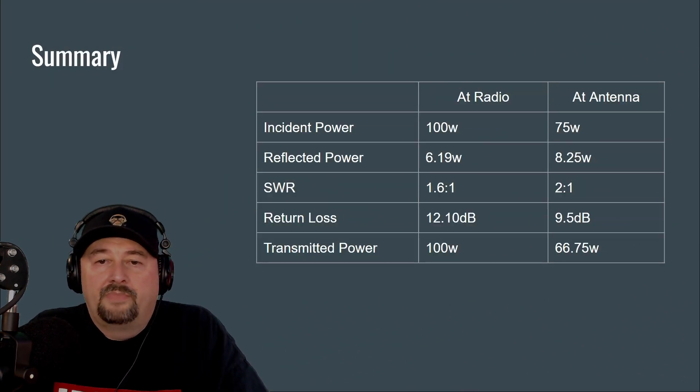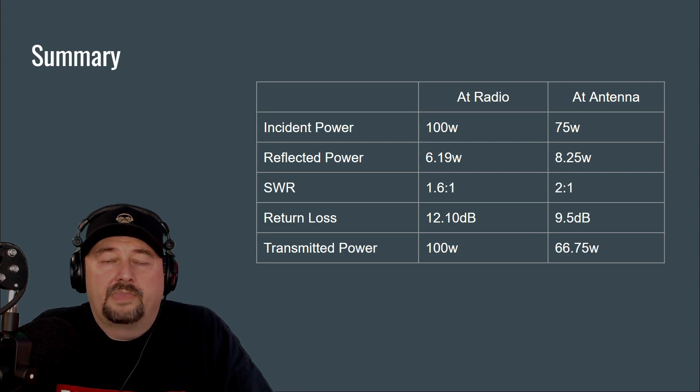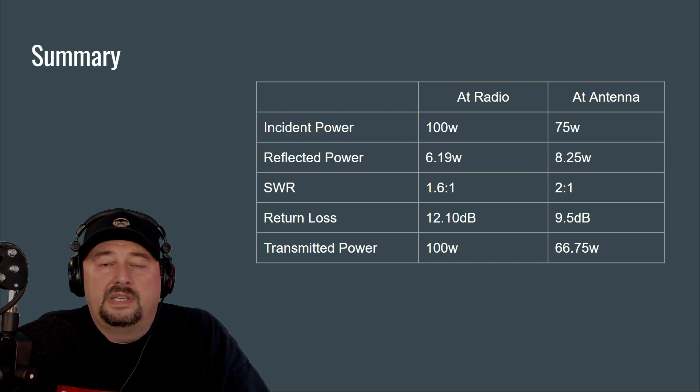All right, so let's go into the summary. Here we have a data table that shows a couple of different measurements at different places. So the first one being incident power, or forward power. At the radio, it's 100 watts. At the antenna, it's really 75. Reflected power at the radio is 6.19 watts. At the antenna, it's really 8.25. SWR readings at the radio are 1.6 to 1, while at the antenna, it's 2 to 1. Return loss at the radio is 12.1 dB and 9.5 dB at the antenna. And then our transmitted power. At the radio, we're going to think we're transmitting at 100 watts, but in all actuality, 66.75 watts. Hopefully, this explains a little bit about SWR, return loss, and how to measure to get accurate representations of what your antenna system is doing.